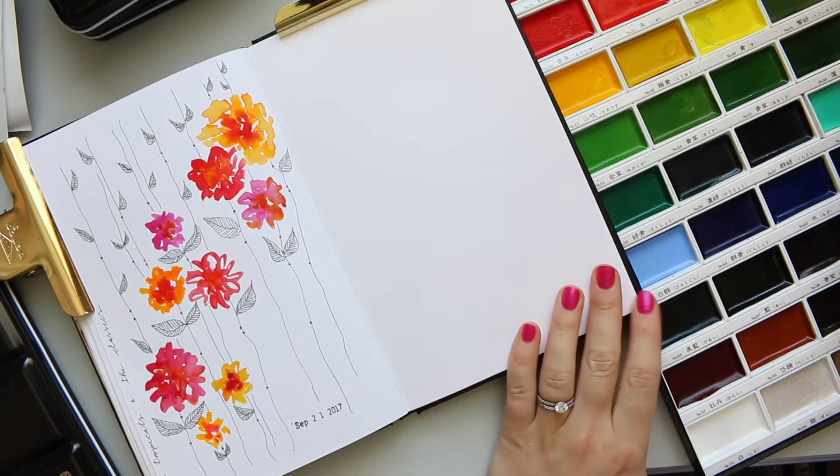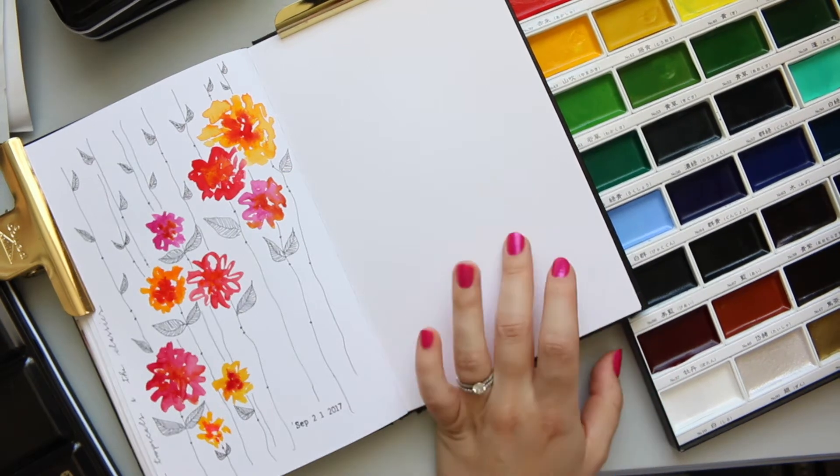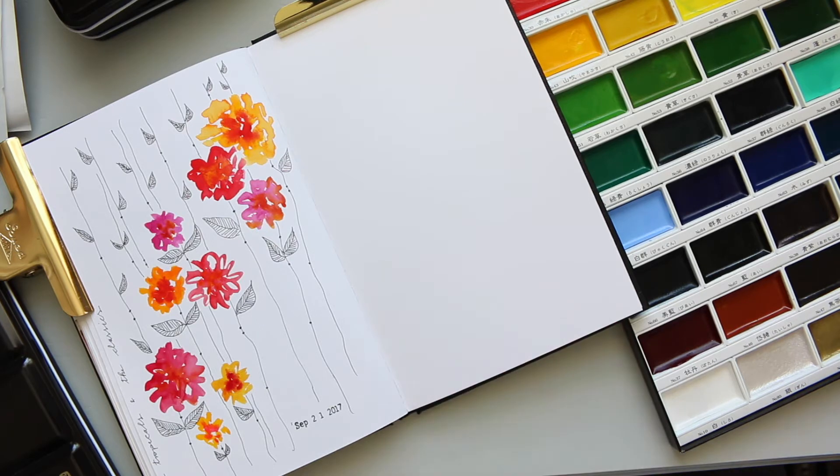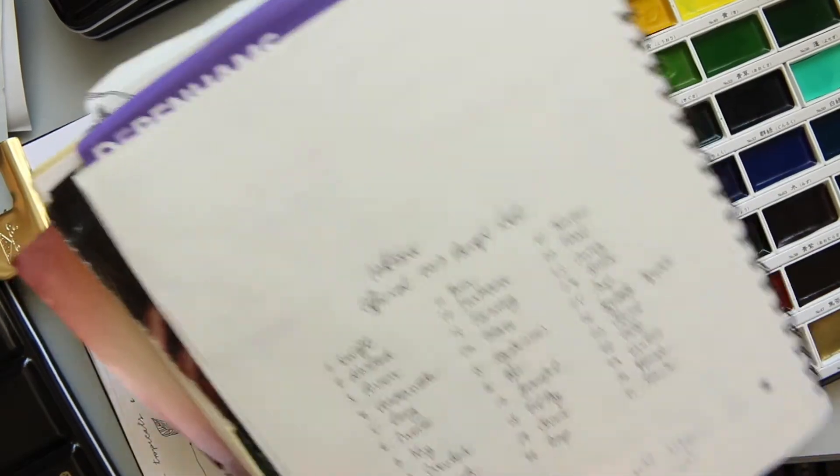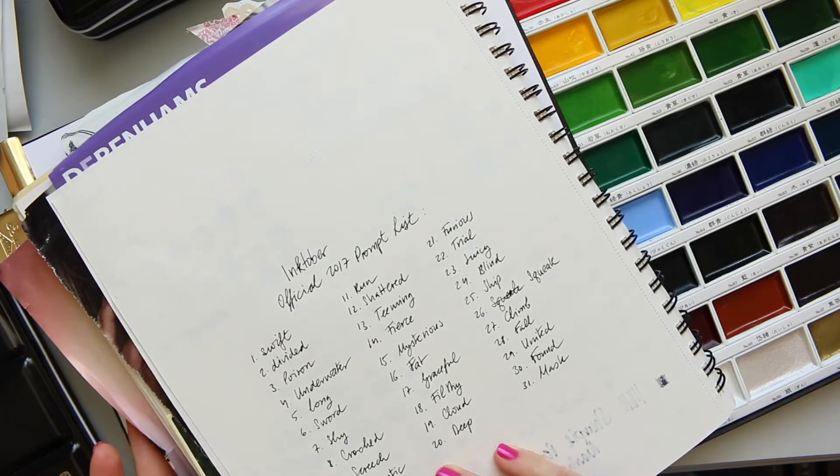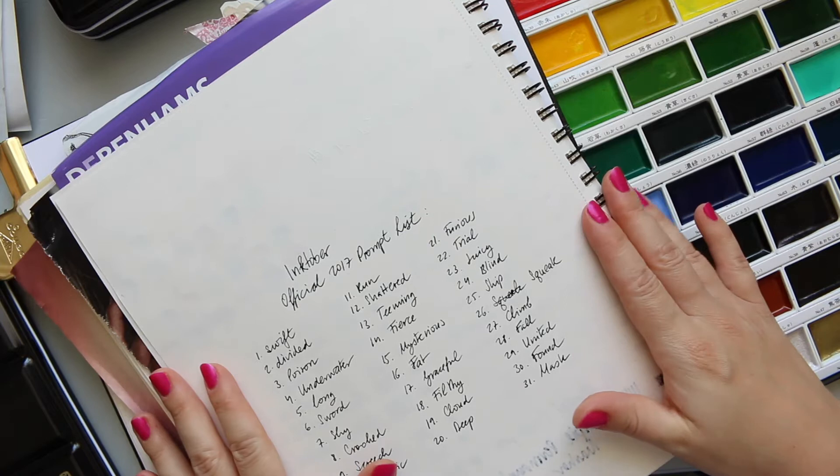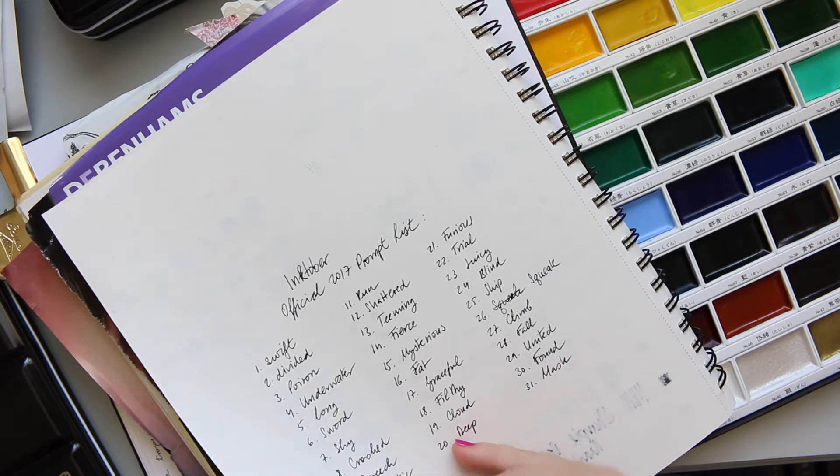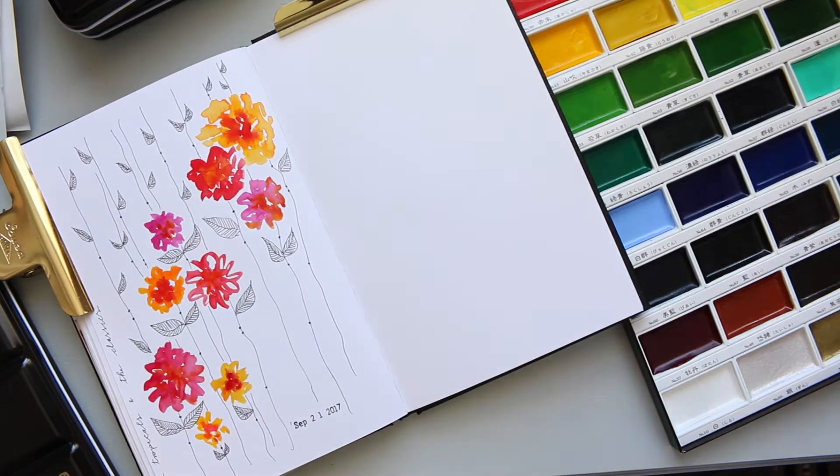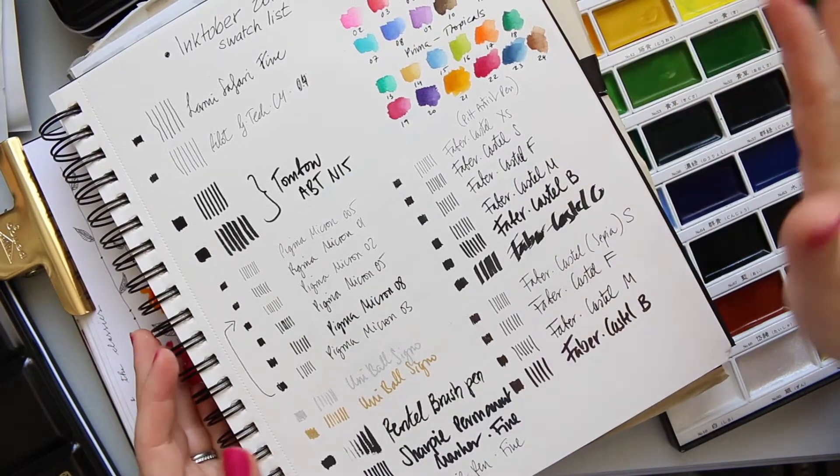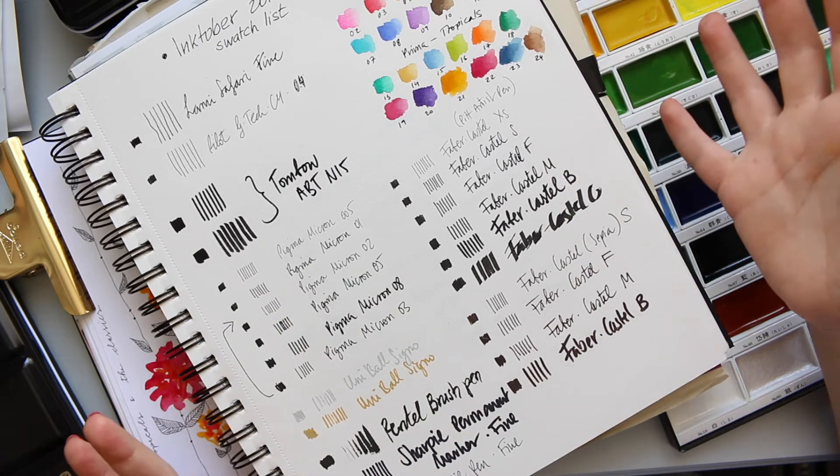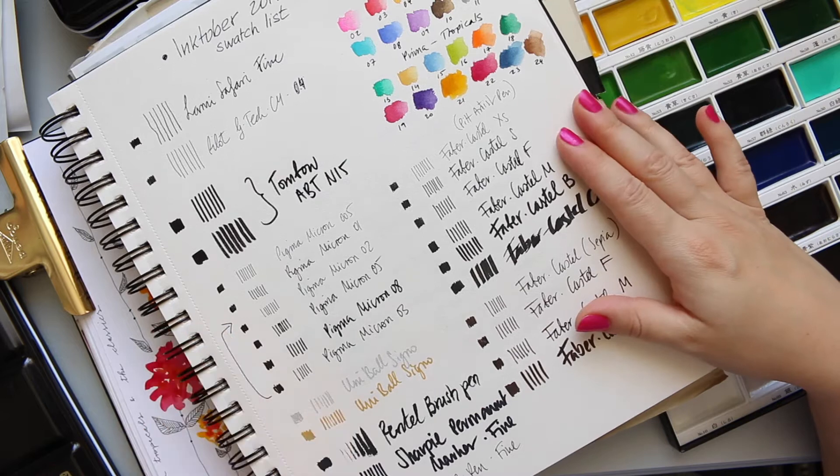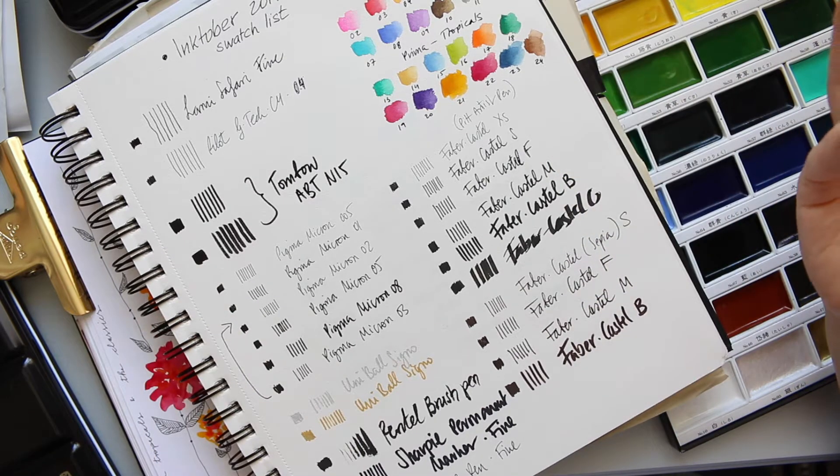Yesterday I filmed a video about getting ready for Inktober. If you don't know what it is, it's basically October month where you paint every day with inks and you get a prompt list. A guy called Jake Parker who is an illustrator and cartoonist came up with it in 2009 just for himself because he wanted to improve his drawing skills, and then it became a big thing and everyone started taking part in this challenge.